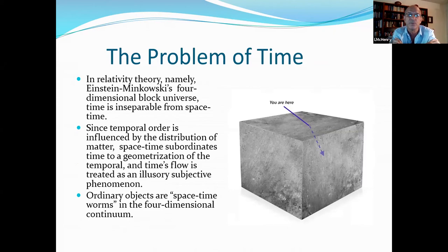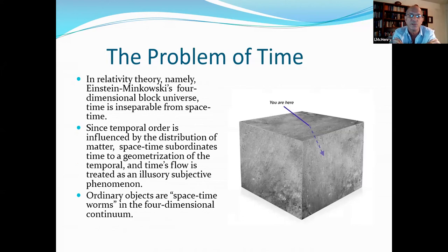The other is in relativity theory, namely Einstein-Minkowski's four-dimensional block universe, where time is inseparable from space-time. Since temporal order is influenced by the distribution of matter, space-time subordinates time to a geometrization of the temporal, and time's flow is treated as an illusory subjective phenomenon. Ordinary objects in the space-time look like space-time worms stretched out, where from beginning to end, past, present, and future all look as if they are eternally present. And so time is really radically different in these two different disunified parts of physics.